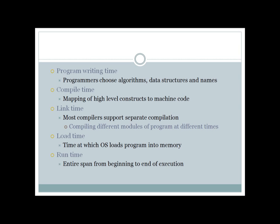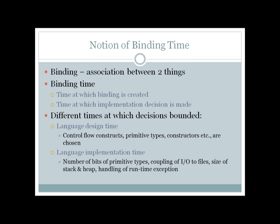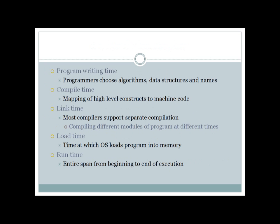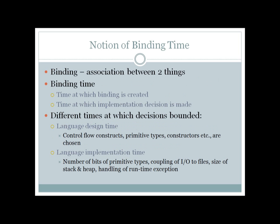Finally, the time needed for executing your program is known as run time. So these are the seven types of binding time: language design time, language implementation time, program writing time, compile time, link time, load time, and run time. This is easy to remember in sequence.